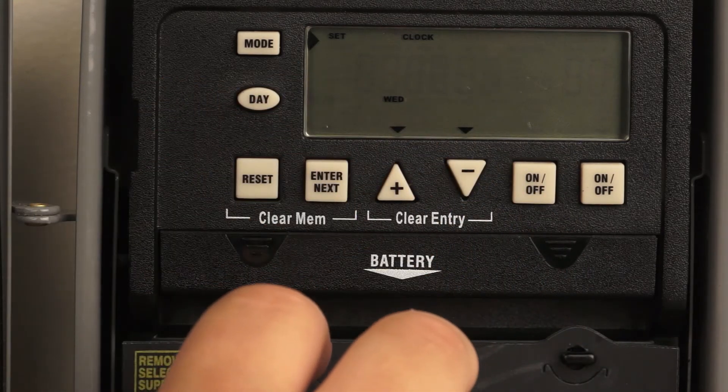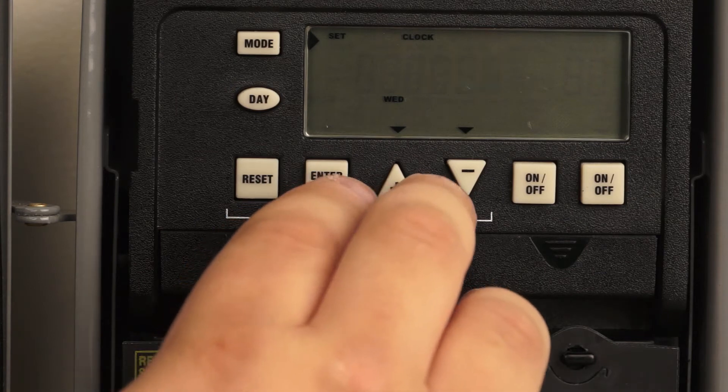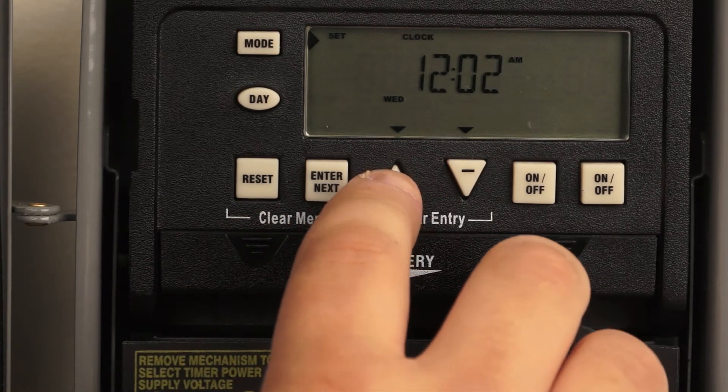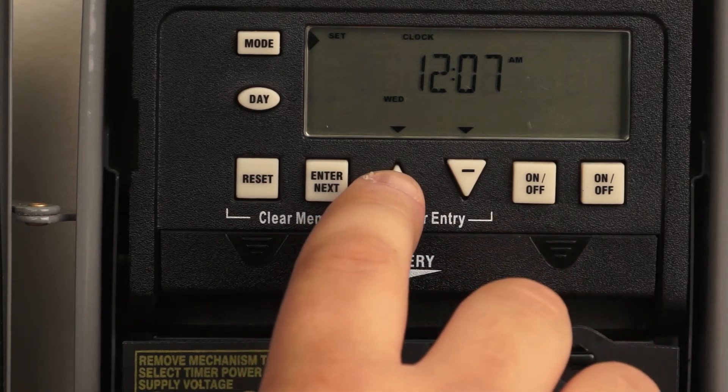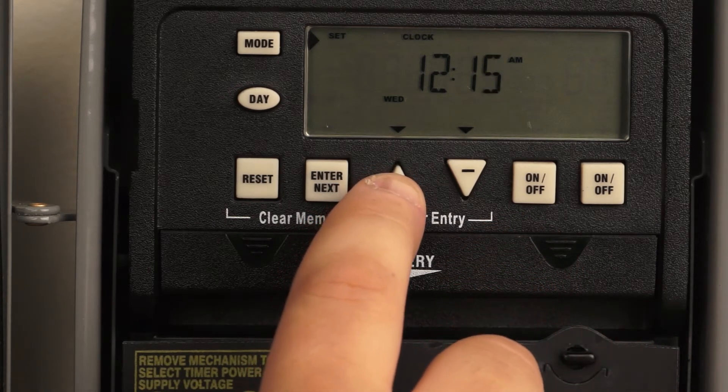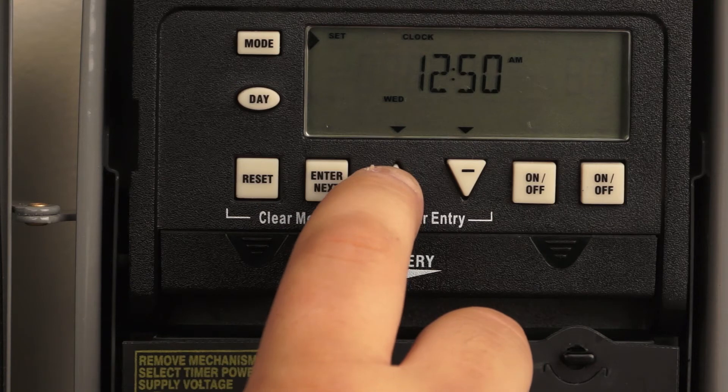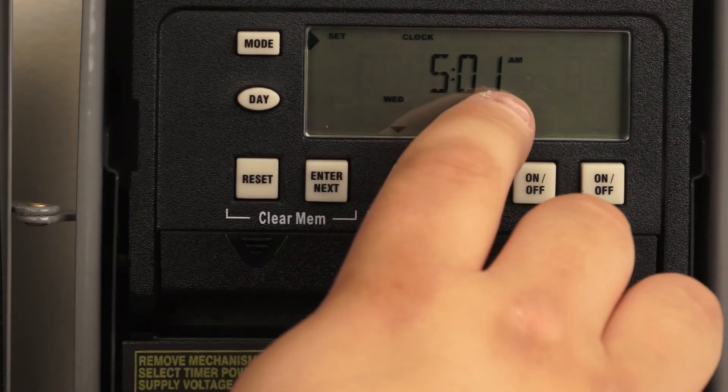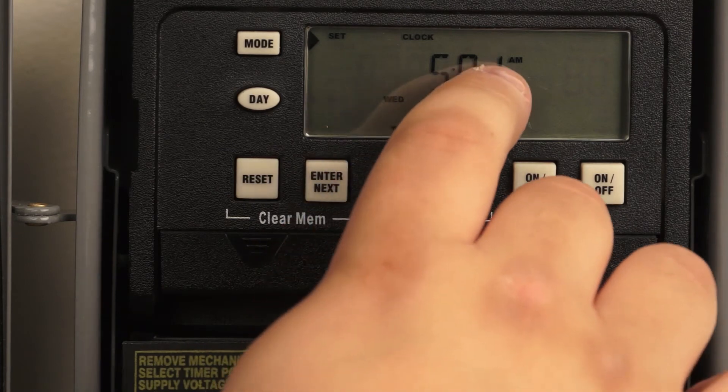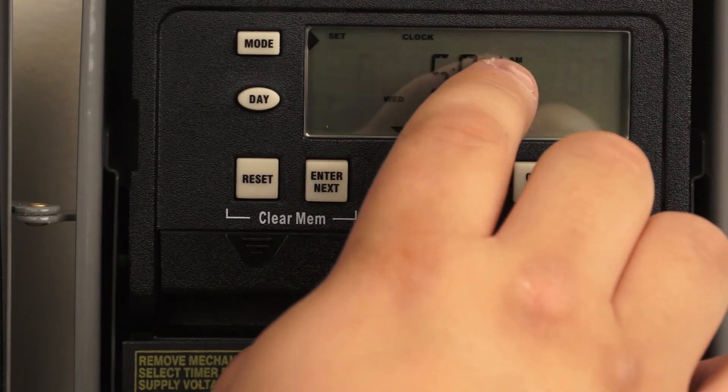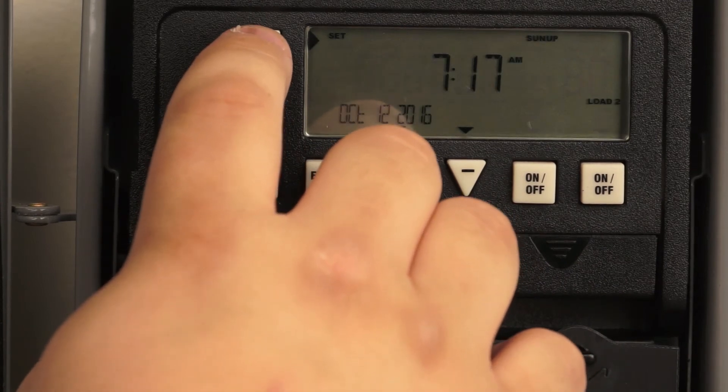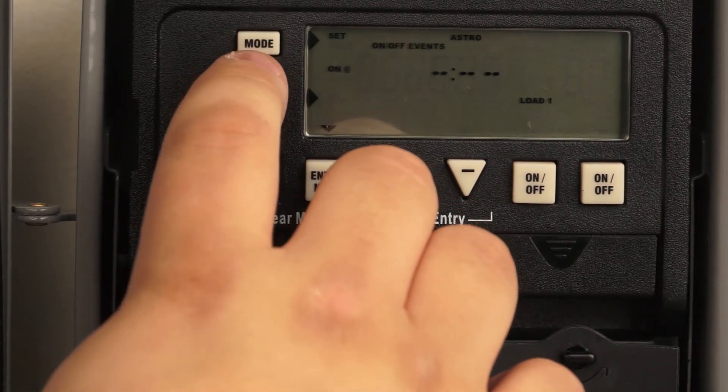So in order to set your time, hit the plus or minus button and if you hold either button down, the time will start moving a lot faster like it just did. So we'll set our time. Be cognizant of the AM PM to make sure you're at the correct time. And then you hit the mode button back to auto.